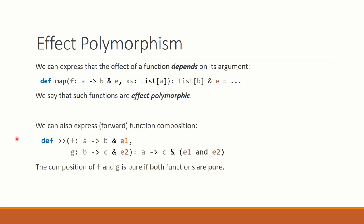We can also express function composition, in this case forward function composition. So given a function F from A to B with effect E1, a function G from B to C with effect E2, we can return a function from A to C with effect E1 and E2. In other words, this function is pure if and only if both F and G are pure.